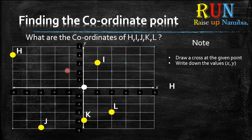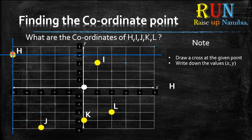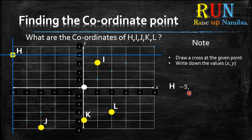Let's start with H. The first thing you want to do is draw your cross at that point. Draw long lines that go throughout the grid. After you draw your cross, you start on the x-axis. Look for where that blue line is crossing the x-axis — it's crossing at negative 5, so that will be your x value. Put a comma, then go to the y-axis — the blue line is crossing at positive 4. Put it into brackets. That's H done.